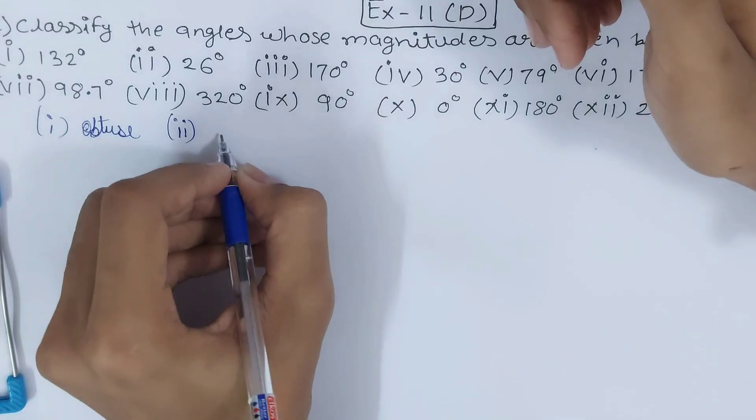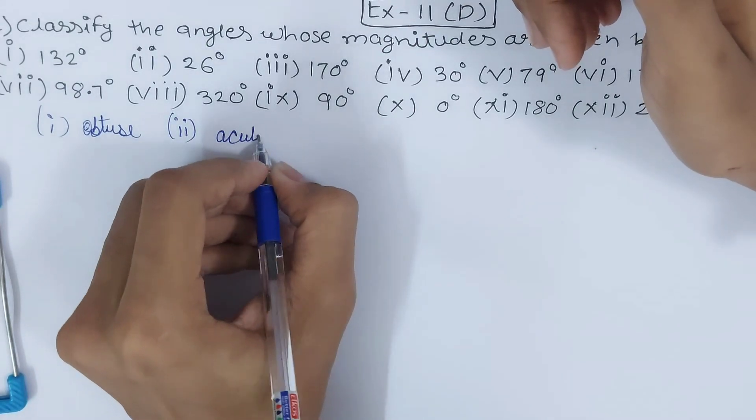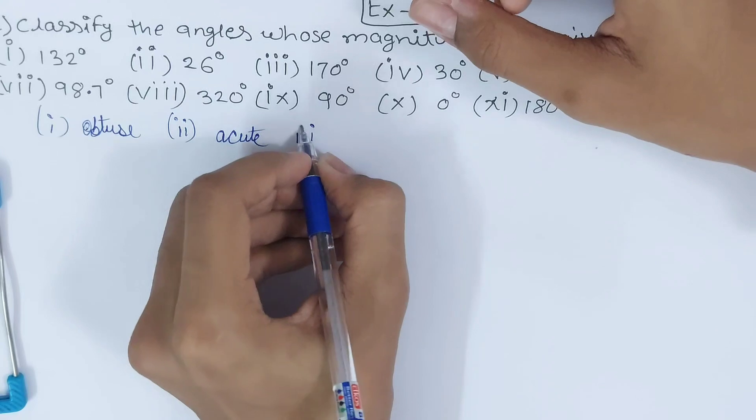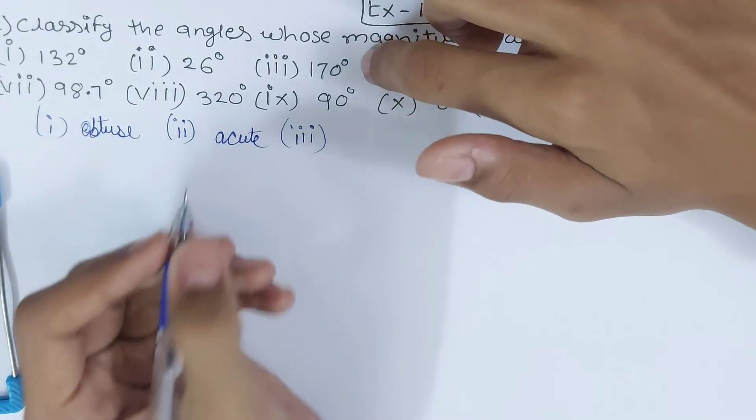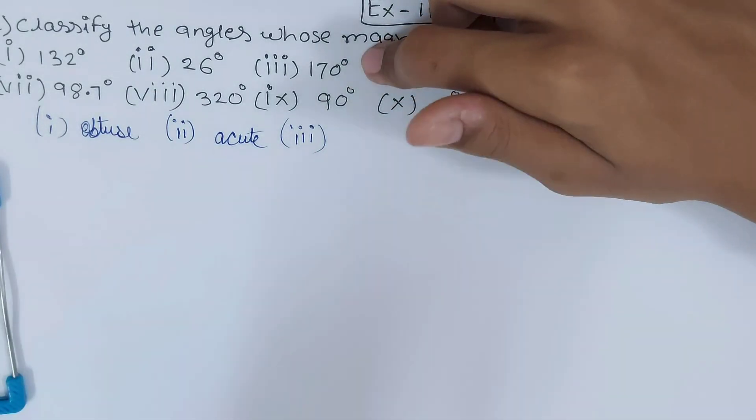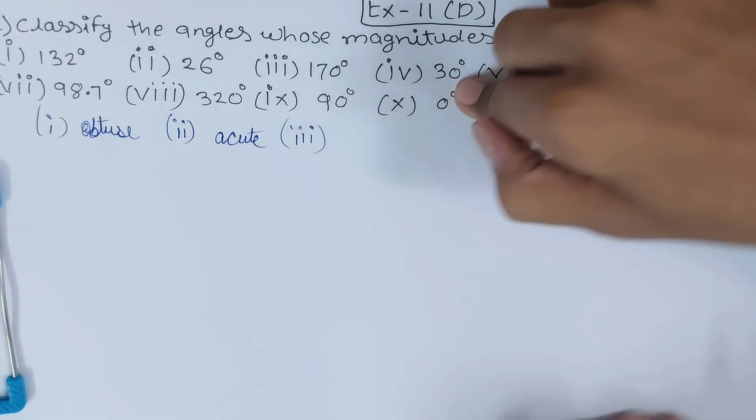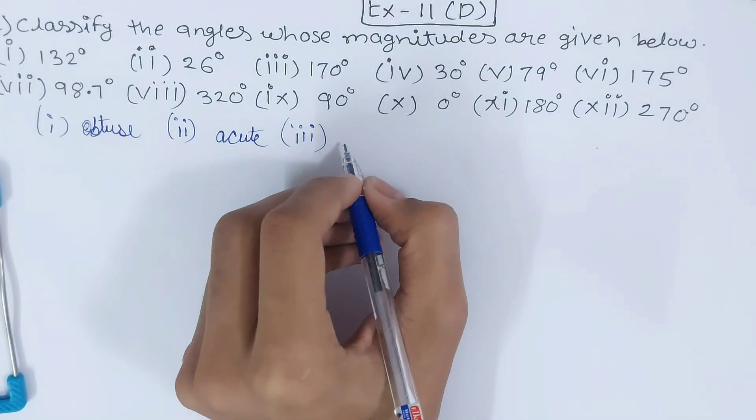Third part is 170 degrees. 170 degrees is same thing - more than 90, less than 180. So your answer will become obtuse angle.